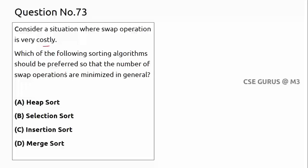Coming to question number 73: consider a situation where the swap operation is very costly. Which sorting algorithm should be preferred so that the number of swap operations is minimized? We need to check which sorting technique has very few swap operations. In heap sort there may be more swaps; let's check selection sort.